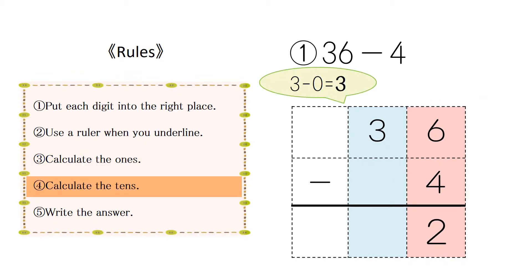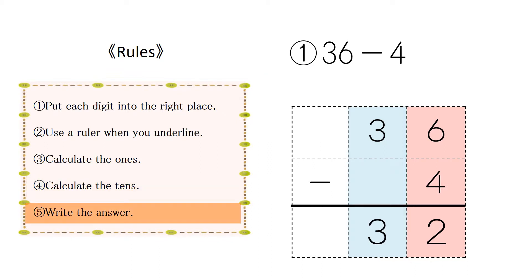Next, calculate the tens. 3-0 equals 3. Write 3 to the tens place. Write the answer to the subtraction. That's all.